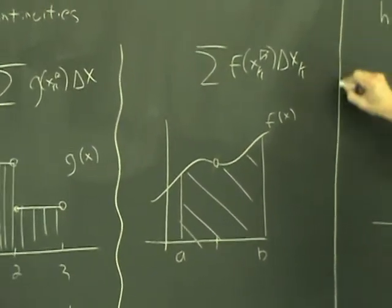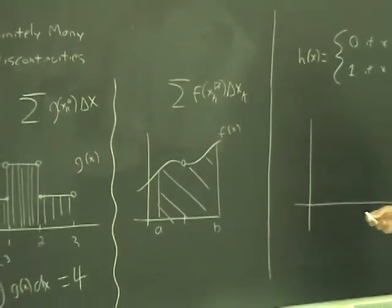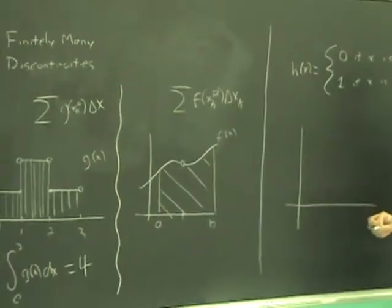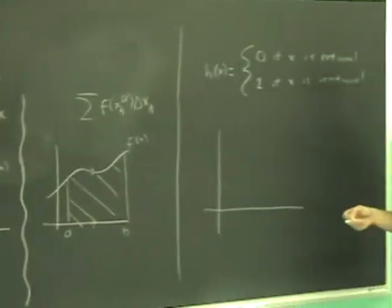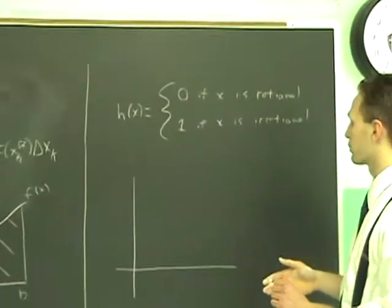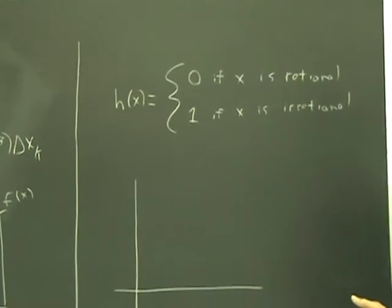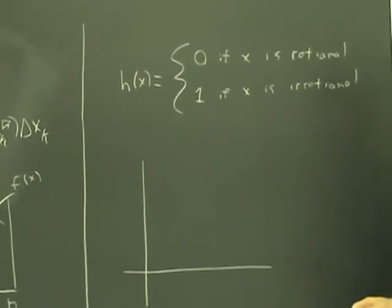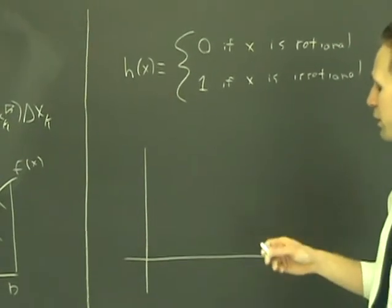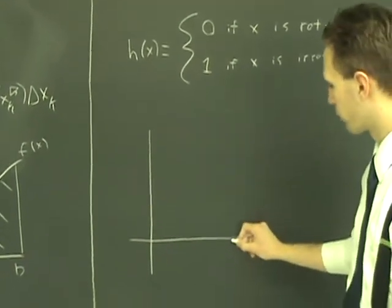I tell my students that you really have to think hard to come up with a function that has infinitely many discontinuities and is therefore unintegrable. This is one of such examples. It comes out of your worst nightmares. Zero if x is rational and one if x is irrational. What could the graph of such a function look like? Let's just examine it on, say, zero to one.